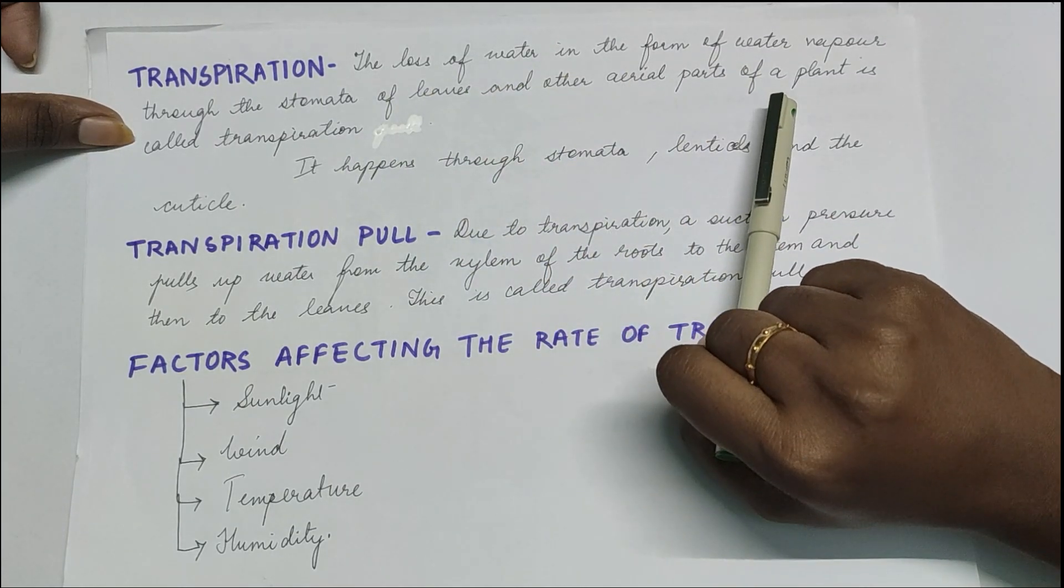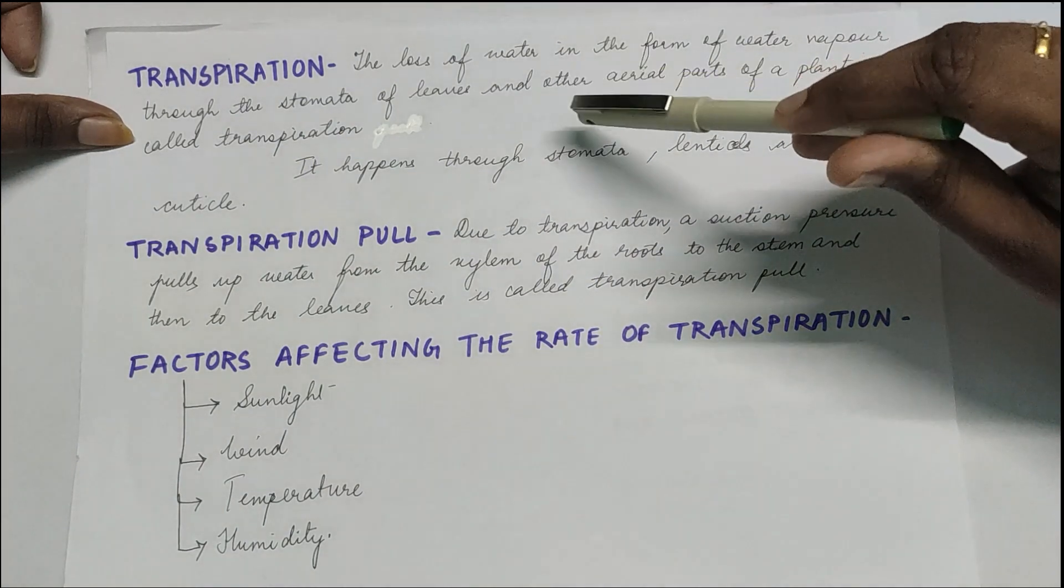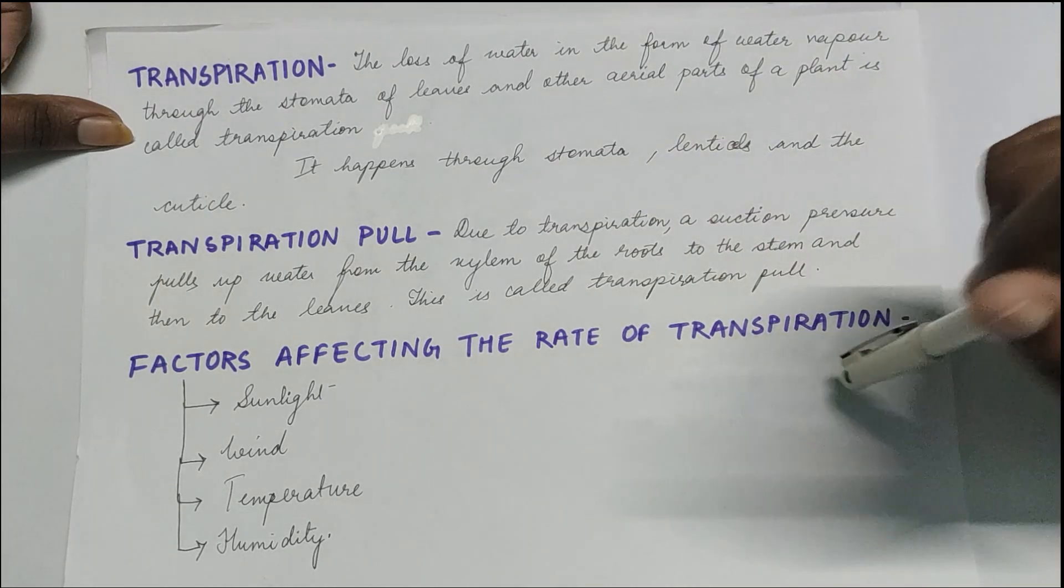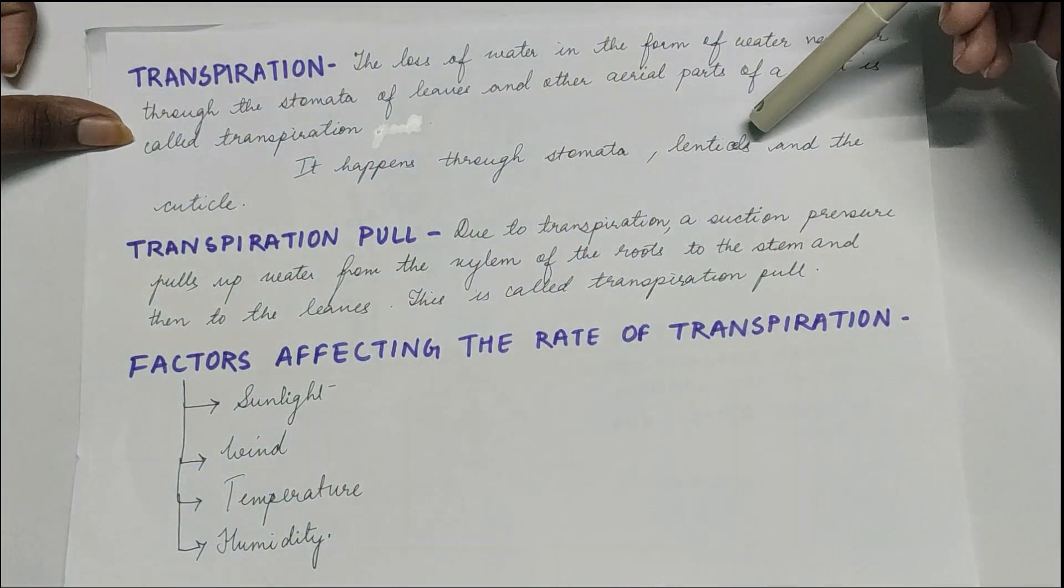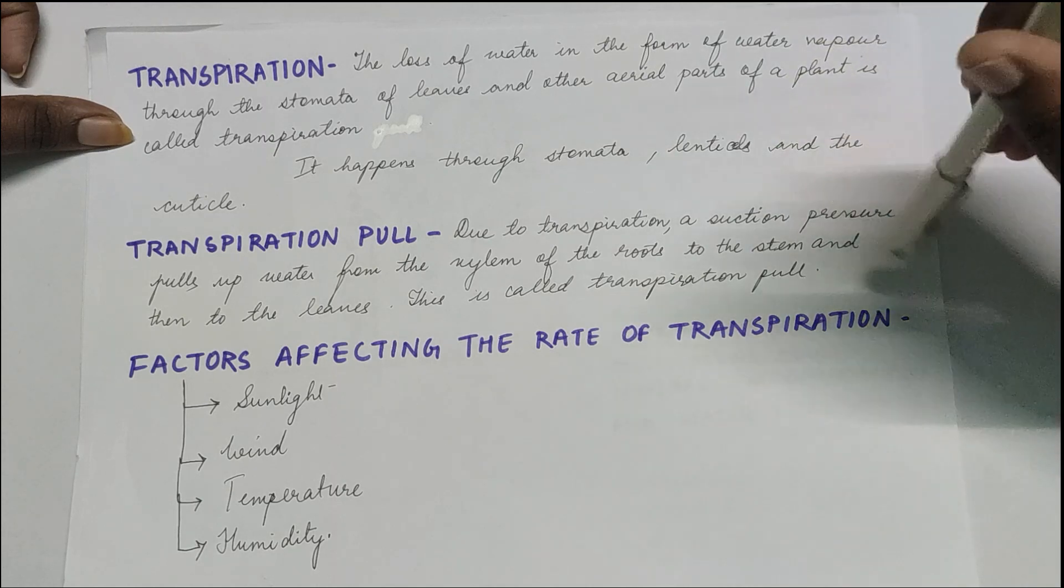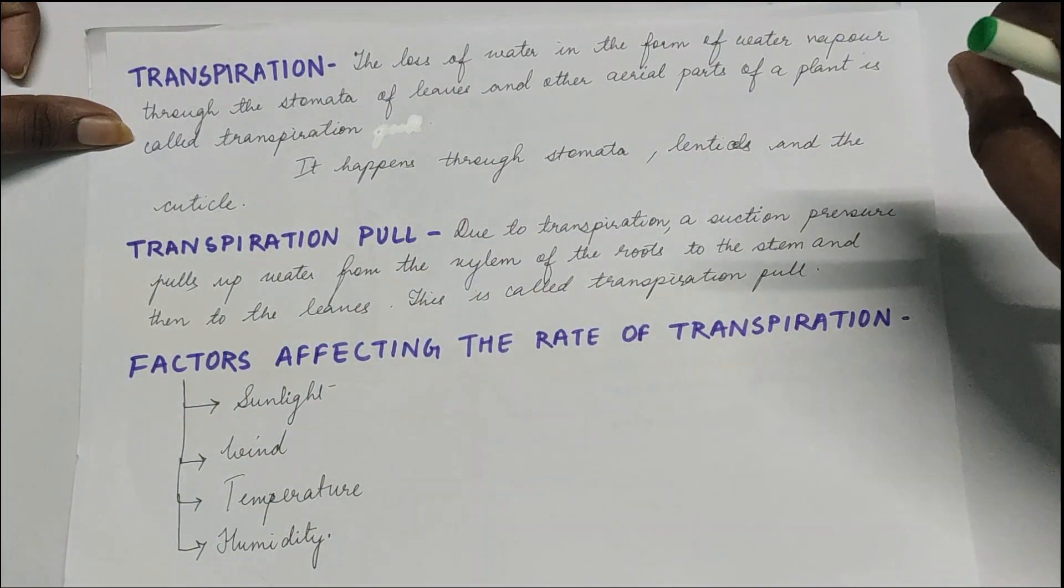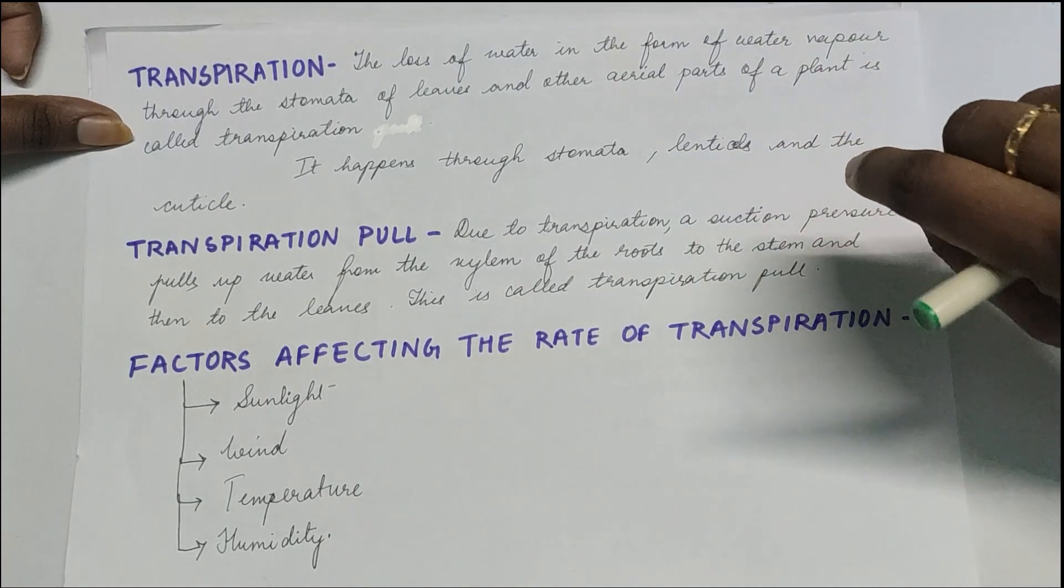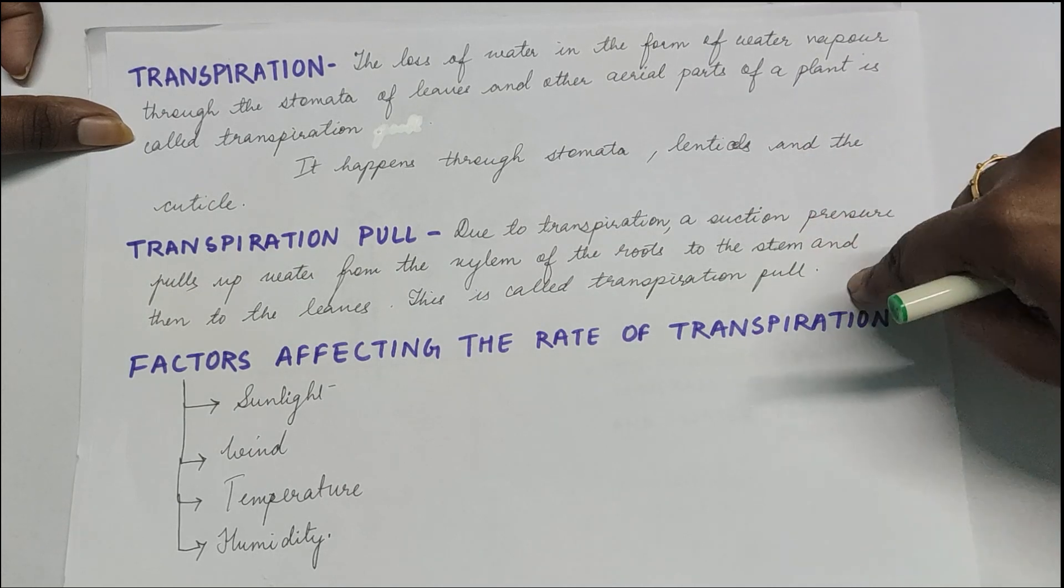So transpiration can happen from the stomata. You might be knowing that stomata is found in the lower surface of the leaves, lenticels, and cuticle. Lenticels are also like stomata but they remain open all the time and are found in the woody stems. Cuticle is a waxy layer generally on leaves. Now transpiration causes a pull, a suction pressure which is pulling the water from the side of the roots to the stem and then to the leaves.